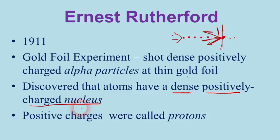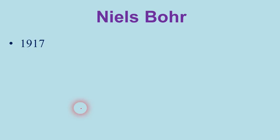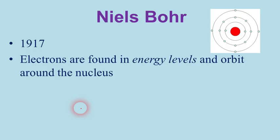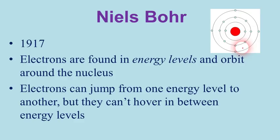Just six years later, in 1917, a scientist from Denmark named Niels Bohr first discovered that electrons are found in specific energy levels. Bohr proposed that these energy levels were circular and that electrons circled the nucleus much like planets orbit the sun — making the atom seem like a miniature solar system. Although you've probably seen pictures of the Bohr model, it was later proven to be quite incorrect. Still, Bohr discovered energy levels and was the first to realize electrons can jump from one energy level to another, but can never hover in between.